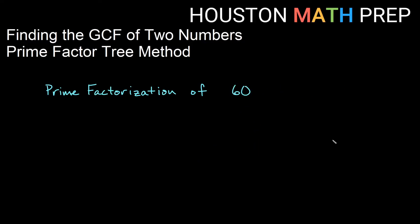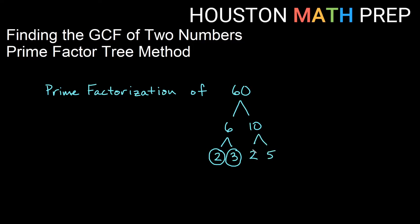Let's do one more — let's do it with 60. The prime factorization of 60: an easy thing to see is that 60 is six times ten. We know that six breaks down into two times three, so we'll keep breaking it down until we get there, and those are both prime numbers. With ten, I can break it down further into two times five, and those are both prime numbers — neither can be broken down further except to one and themselves. Writing in ascending order gives us two times two times three times five. That's the prime factorization of 60.